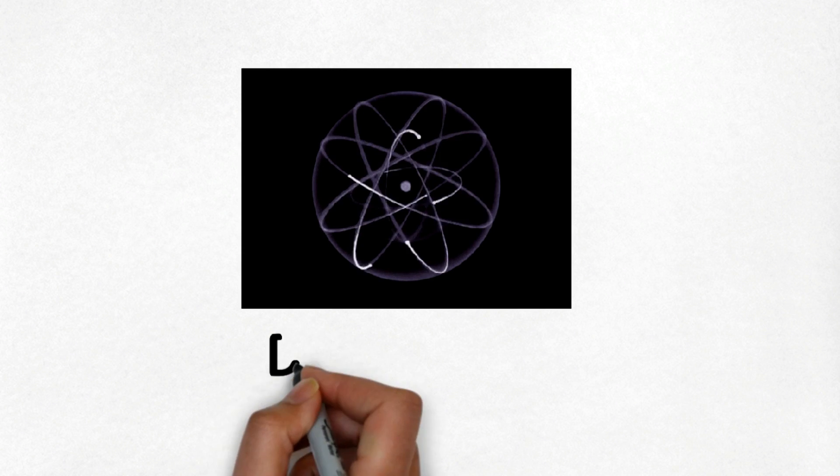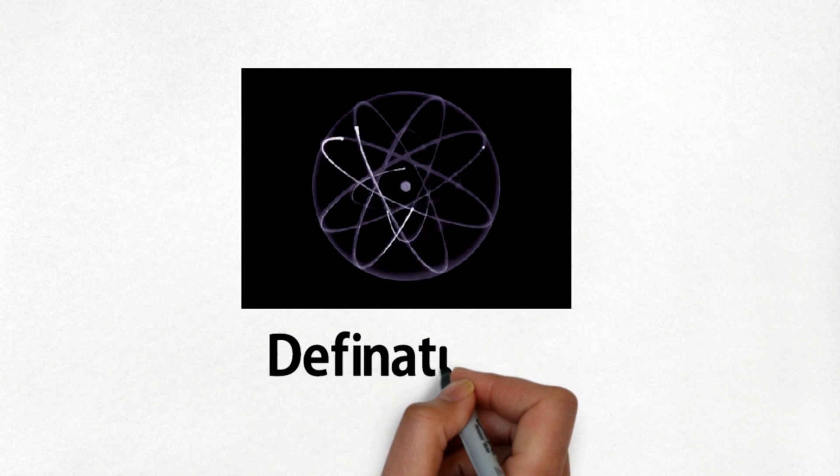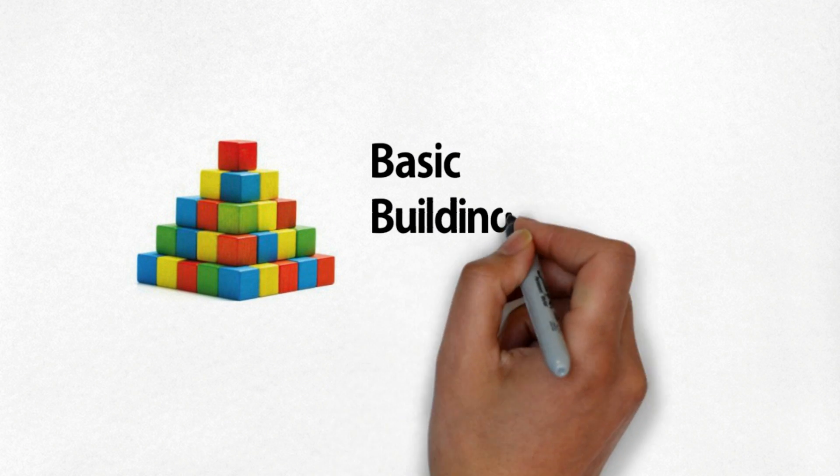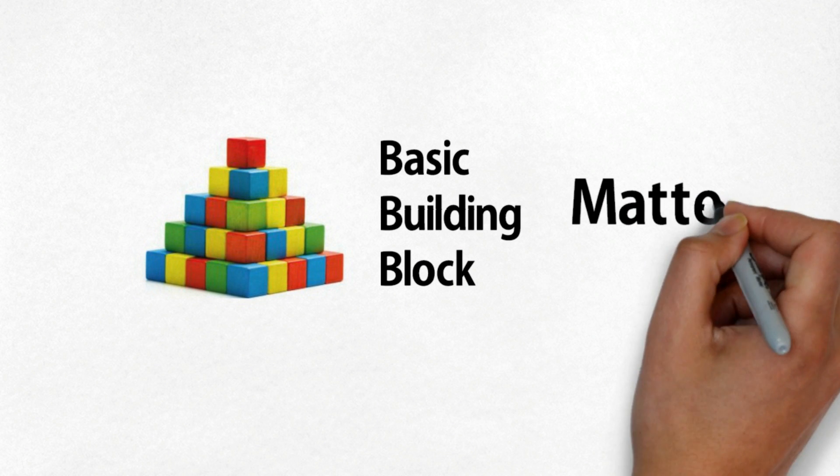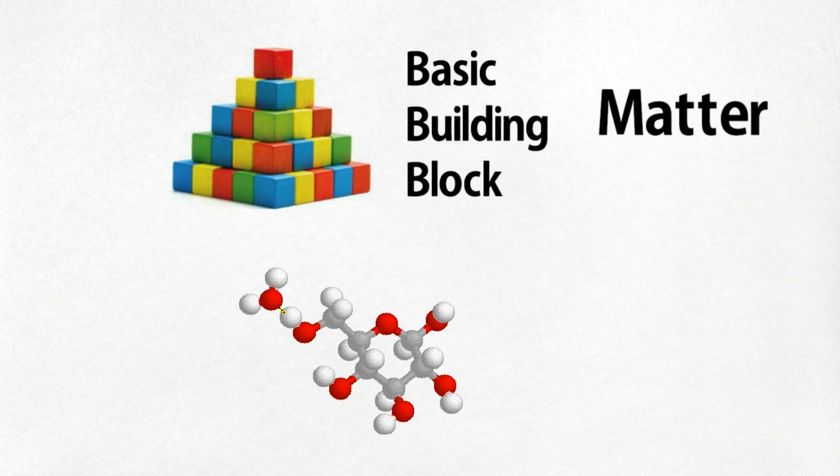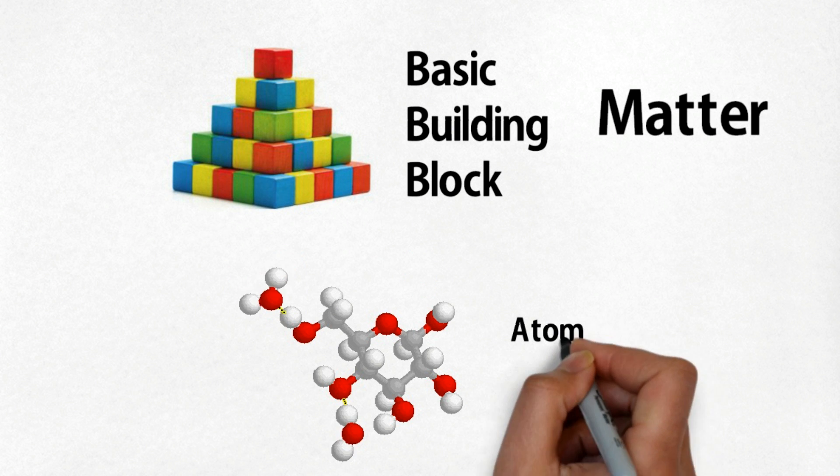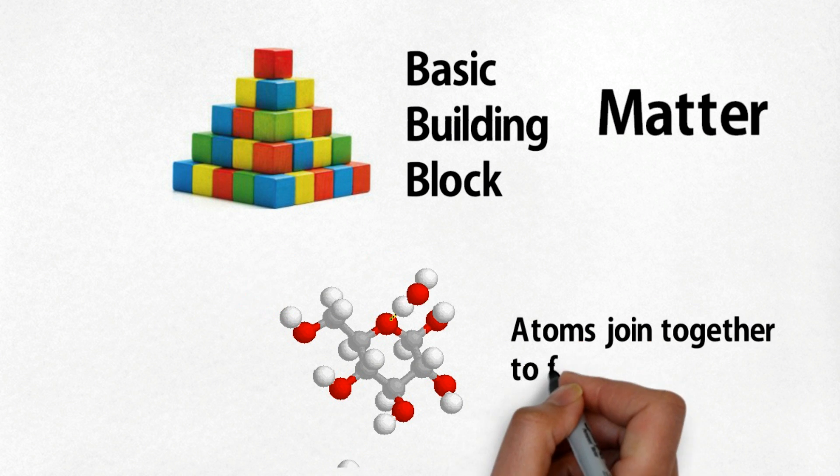Now let's know the definition of atom. Atoms are the basic building blocks of ordinary matter. Atoms can join together to form molecules, which in turn form most of the objects around you.